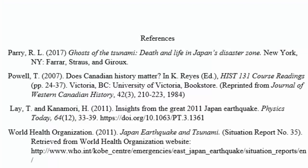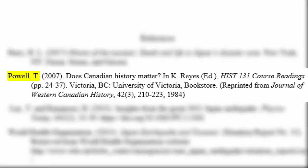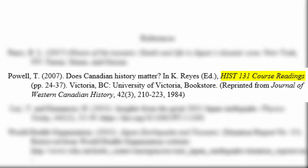Alternatively, works in a course pack can be cited as you would a work in an anthology or a chapter in an edited book. First, you'll start with the author of the piece, followed by the year that the course pack was printed, followed by the title of the work. Next, you'll use the word "in" and then list the editor of the course pack — probably your professor. In italics, you'll list the title of the course pack, followed by the page range the work occupies within the course pack.